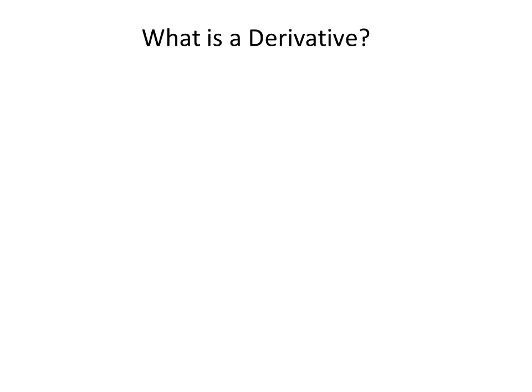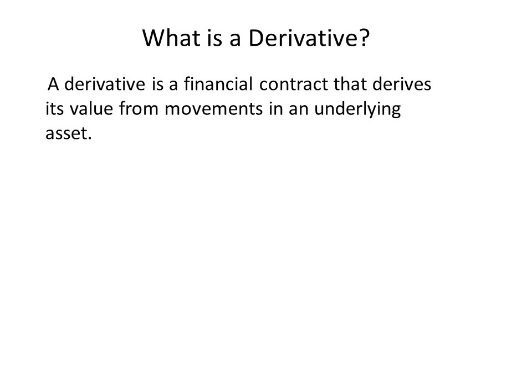Welcome to this presentation: What is a derivative? A derivative can be described as a financial contract which derives its value from movements in an underlying asset. The underlying asset could be, for example, some barrels of oil, some shares in a company, some government bonds, or various other commodities like coffee and cocoa. So a simple derivative is a financial contract which tracks the price movement of an underlying asset.